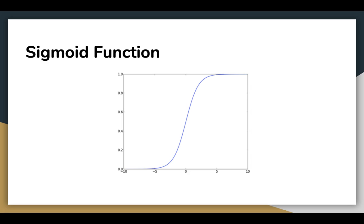If the output of the sigmoid function is more than 0.5, we can classify the outcome as yes or a 1, and if it is less than 0.5, we can classify it as 0 or a no. For example, if the output is 0.75, we can say in terms of probability there is 75% chance that patient will suffer from cancer.